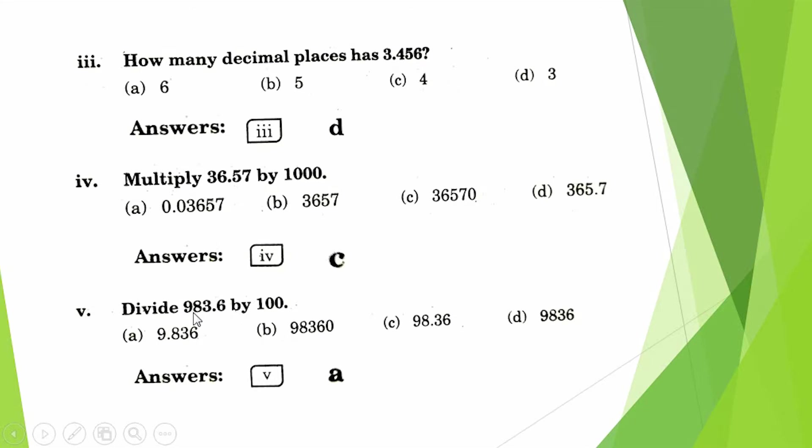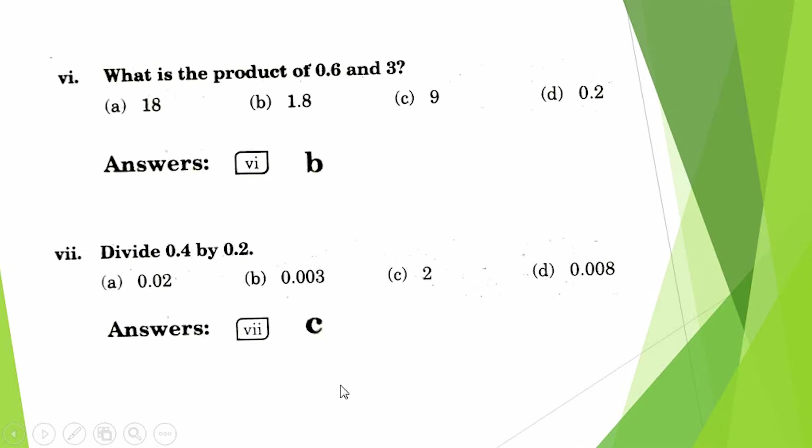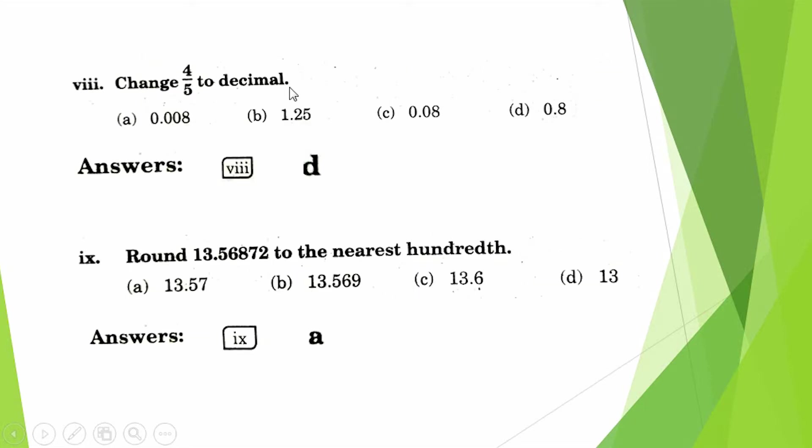Divide 983.6 by 100. This point will change here. Now the value is 9.836. What is the product of 0.6 and 3? Answer will be 1.8.